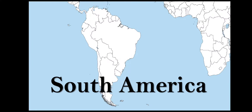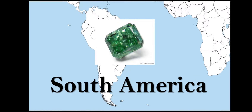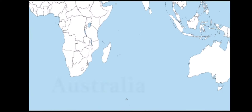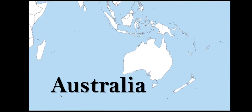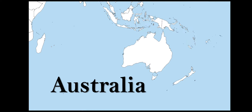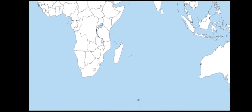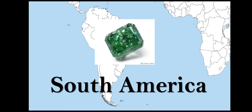A green diamond is the rarest diamond in the world. The oldest rocks in the world are in western Australia and date from 4,300 million years ago — only 300 million years after the Earth was formed. Africa is rich in mineral resources.